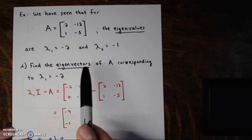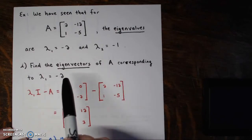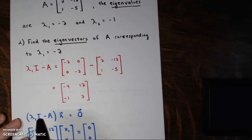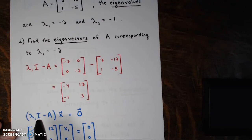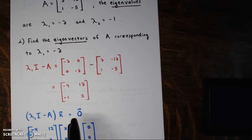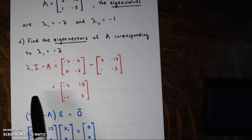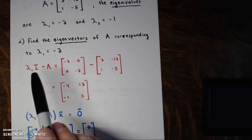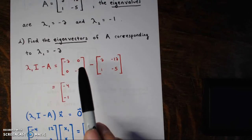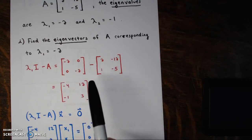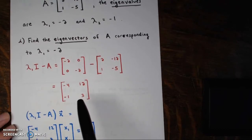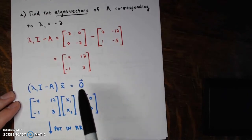In part 1, let's find the eigenvectors of this matrix corresponding to lambda 1, which is -2. We're going to solve the equation (lambda 1 times I minus A) times x equals the zero vector. Lambda 1 times I is just -2 down the diagonals and zero everywhere else. Subtracting A, we get the 2 by 2 matrix with entries -4, 12, -1, 3. We now find what vectors x we can multiply this by to get the zero vector.